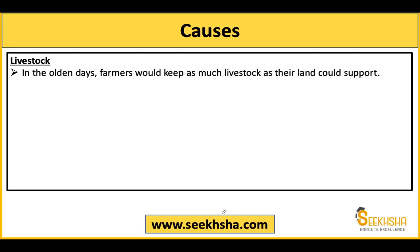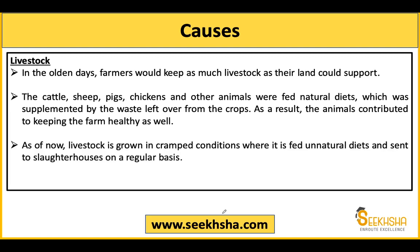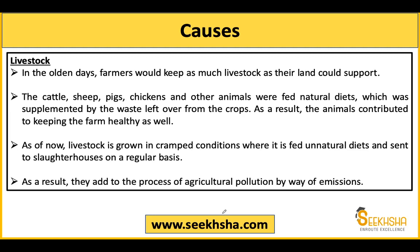Livestock is another major cause. Farmers use livestock — cattle, sheep, pigs, chickens, and other animals — using natural crop waste for feed. When livestock became a large-scale major activity, the livestock population increased significantly. When animals become weak, they go to slaughterhouses. Ultimately this large livestock population releases a lot of gases from the livestock sector.